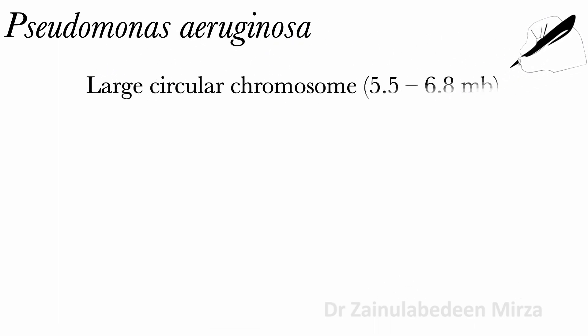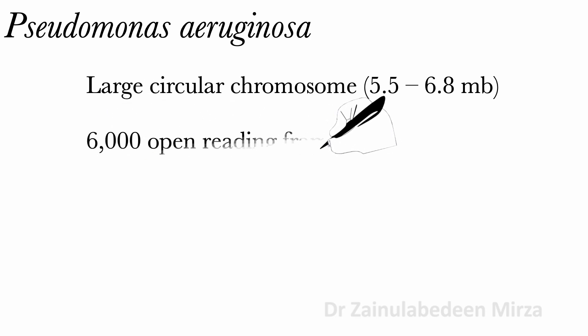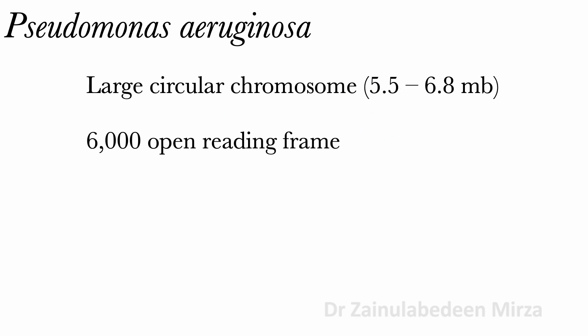Pseudomonas aeruginosa consists of a large circular chromosome of 5.5 to 6.8 MB with about 6,000 open reading frames, and plasmids of various sizes depending on strain.